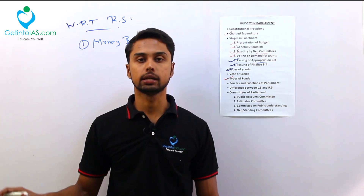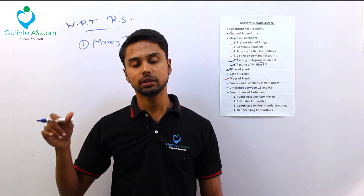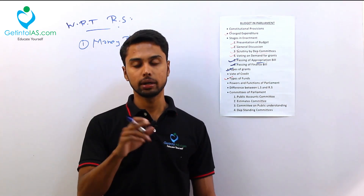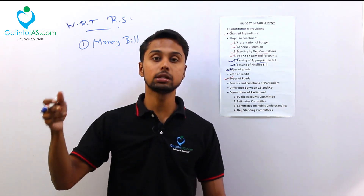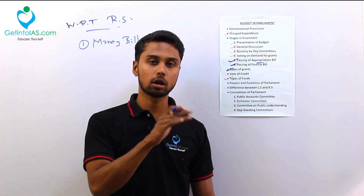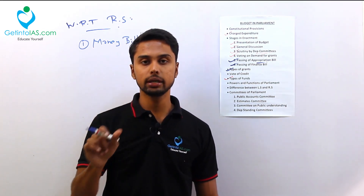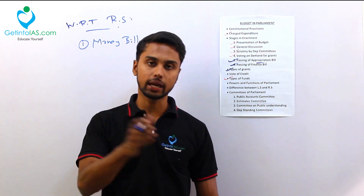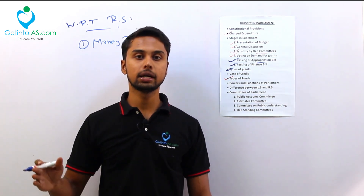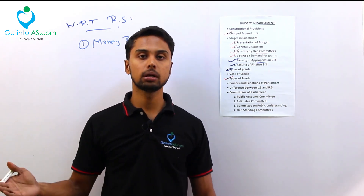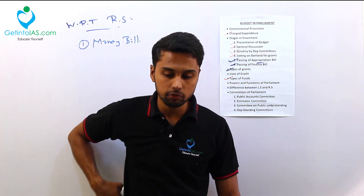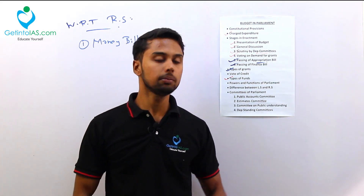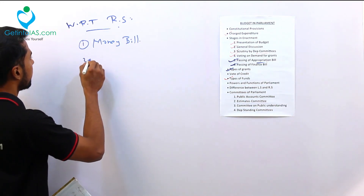In terms of money bills, Rajya Sabha has only 14 days. Within those 14 days, Rajya Sabha can accept the bill, return it, or suggest amendments. But after the 14th day, whether Rajya Sabha agrees or not, it is excluded and the bill is considered passed. So with respect to money bills, Rajya Sabha is not having any powers — Lok Sabha has more powers here.